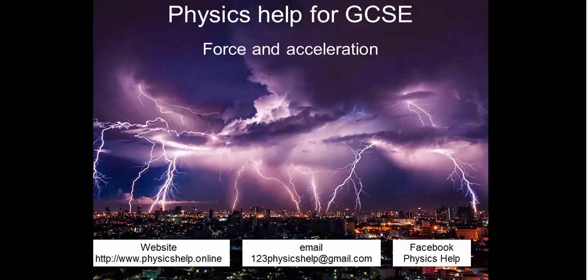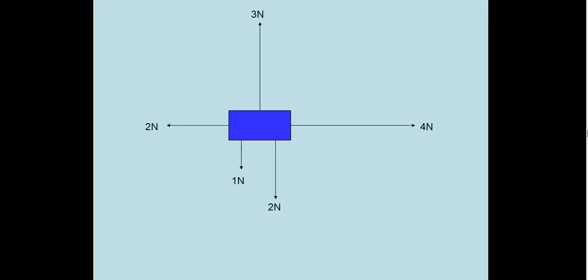Force and acceleration. Here we have an object subjected to several forces. We have 2 plus 1 newtons acting down, which will be cancelled out by 3 newtons acting up. 2 newtons to the left will cancel 2 of the 4 newtons to the right.